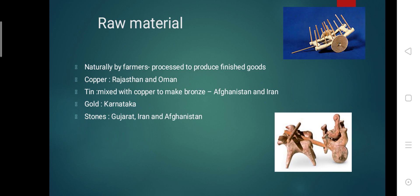Tin was mixed with copper to produce bronze — bronze is produced by mixing tin and copper — and this tin was brought from present-day Afghanistan and Iran. Gold could have come all the way from present-day Karnataka, which is rich in gold. Precious stones were found from Gujarat, Iran, and Afghanistan.